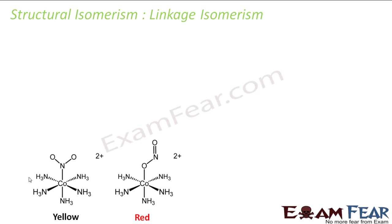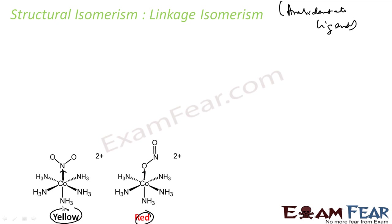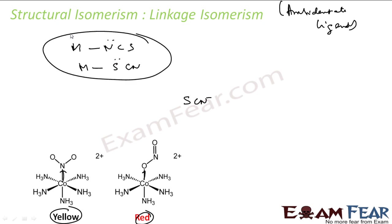Let us study some different types of structural isomers. The first is linkage isomers. This happens when the ligand has more than one donor atom — this is called an ambidentate ligand. Another example of an ambidentate ligand is SCN⁻. The metal can bond with nitrogen or the metal can bond with sulfur. Thiocyanide is also an example of a linkage isomer.